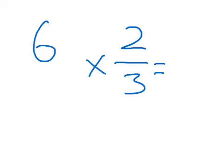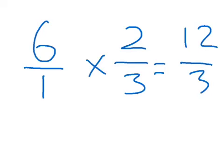In this case I've got 6 times 2 thirds. So all I need to do is turn my whole number into a fraction. So 6 over 1. And now I just multiply. And I do that by first multiplying numerators: 6 times 2 is 12. And then multiply denominators: 1 times 3 is 3. So the answer is 12 over 3.